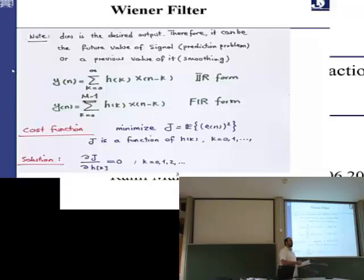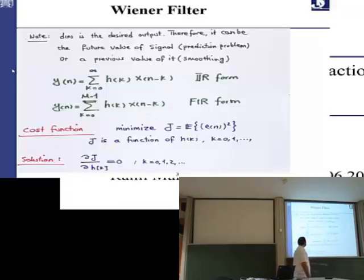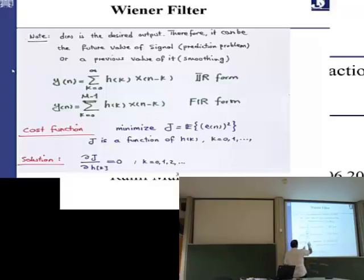The filter convolves with the input X(n). Depending on how many taps the filter has, it can be IIR or FIR. If we have an infinite number of taps, it's an IIR filter. If we have a limited number N of taps, it's an FIR filter. We are trying to minimize this cost function, which is quadratic and therefore convex.